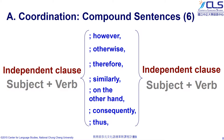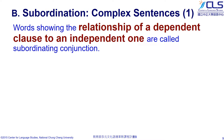Conjunctive adverbs also go between two independent clauses. This time, they follow a semicolon. Now, let's move on to the second way to combine sentences: subordination.